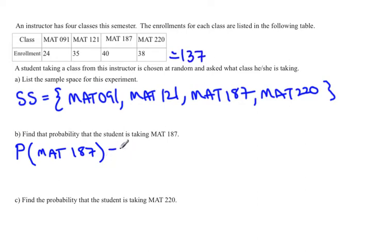So the probability that a student was in this teacher's 187 class, well there's 40 students in 187 out of the total of 137. So it would be 40 out of 137. It's best not to go ahead and simplify these or make them into decimals because now you actually know what frequencies you were dealing with and what total you were dealing with. So I prefer to just leave them as unreduced fractions.